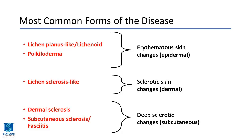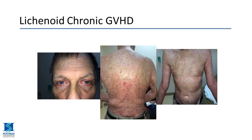Here we have a patient with lichenoid chronic graft-versus-host disease — red and sometimes purplish-looking plaques or papules, which are raised lesions above the skin. Sometimes these lesions can be very localized to one extremity, or sometimes they can be very diffuse, involving the skin around the face and particularly around the eyes and orbits.